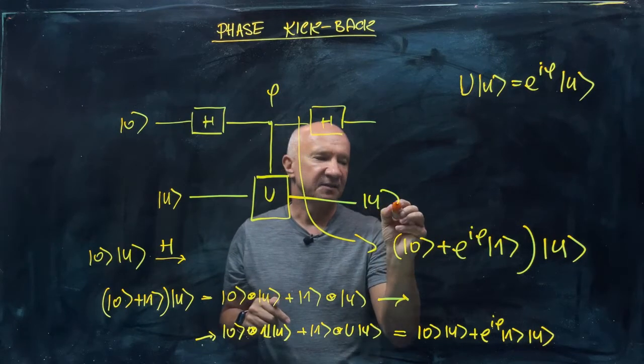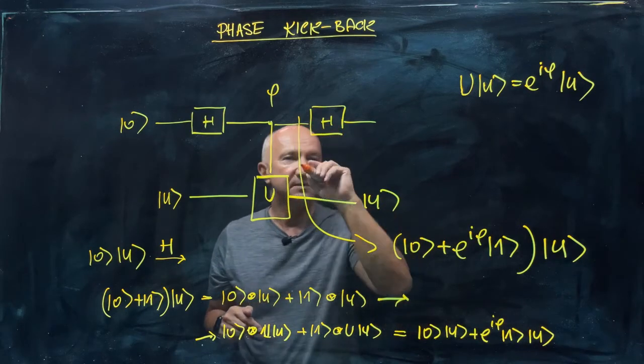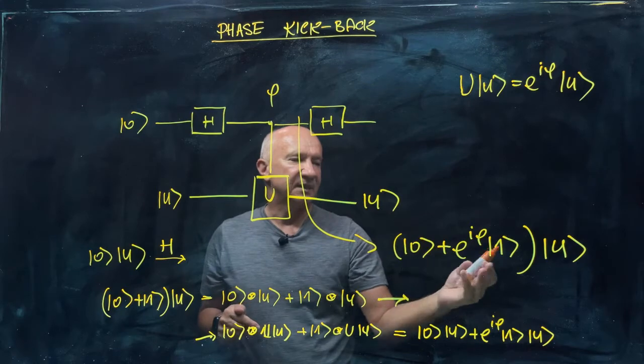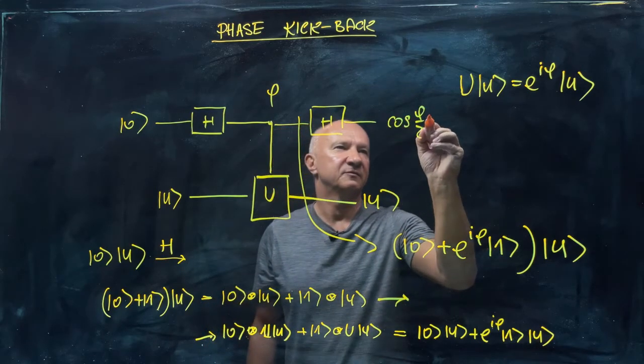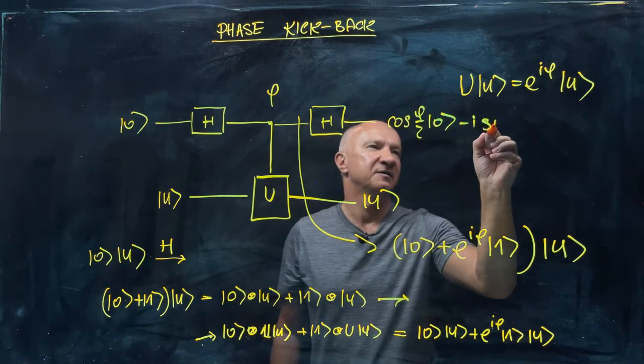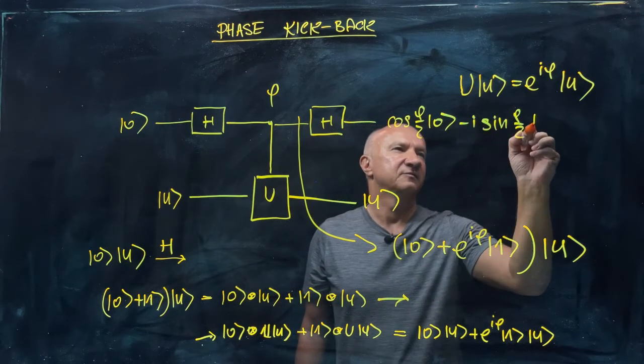The second qubit will stay in state U, as you can see, and acting with Hadamard gate on this state, you'll get the usual cos phi over two zero minus i sine phi over two one.